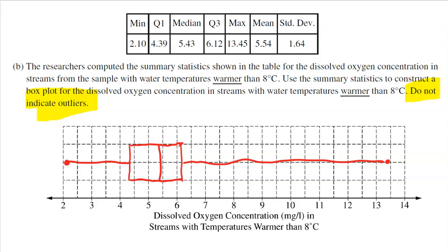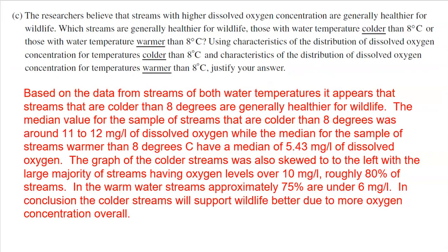75% of streams are below 6. So just thinking here, if you think about the fact that for the colder streams, 80% are above 10, that's a lot. For the warmer streams, 75% are below 6. So if we're looking to have that higher concentration, we're definitely wanting to get into those colder temperature waters. So in conclusion, the colder streams will support wildlife better due to more oxygen concentration overall.